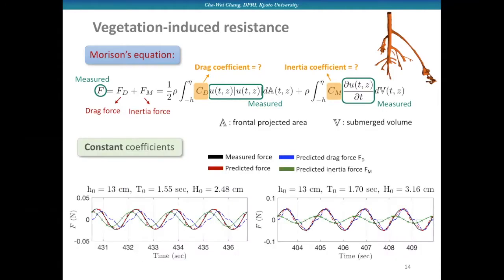Assuming that the force coefficients are constant, with all the measurements we have, we can start estimating the values of CD and CM. Here I present two cases with different incident conditions for irregular waves. These figures are snapshots of the estimated forces and measurements. Our estimations are pretty reasonable comparing with the measured data. For our testing conditions, even for longer waves, the inertia forces are still not negligible, although smaller compared with drag components.